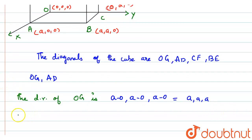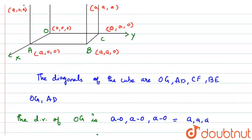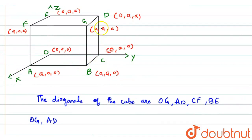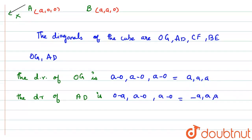Similarly, the direction ratio of AD: A = (a, 0, 0) and D = (0, a, a). So D minus A gives (0−a, a−0, a−0) = (−a, a, a). This is the direction ratio of AD.